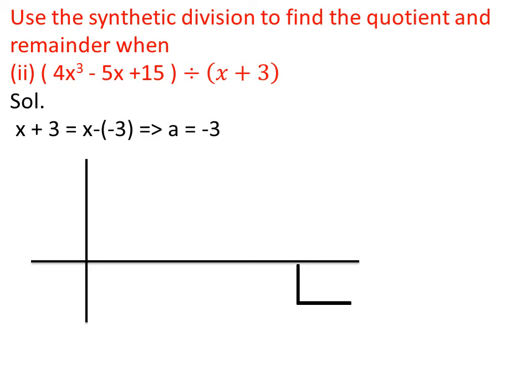We write the coefficients of the dividend in the first row with 0 as the coefficient for any missing powers of x in descending order. Since x³ is present but x² is missing, we write 0 in place of x². So we write: 4, 0, -5, and 15 as the coefficients. The value of a = -3 is written on the left side. We bring down the first number, 4, under the line. Taking the product of 4 and -3 gives -12, which we write under 0.